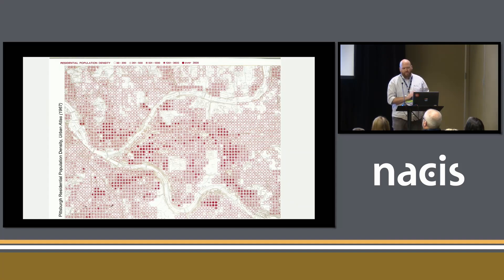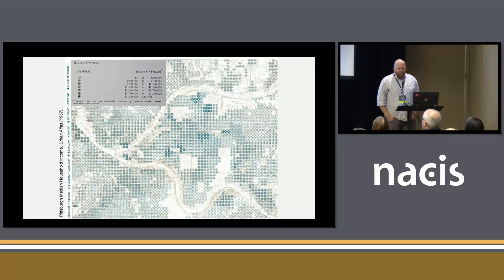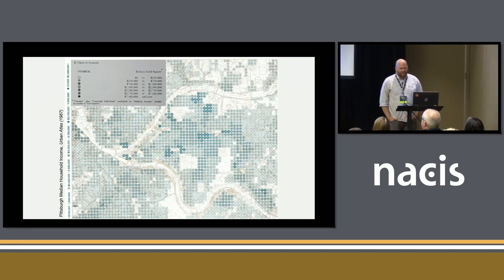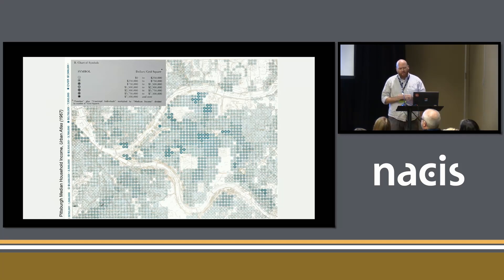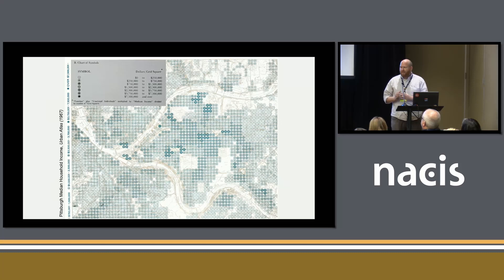I also want to point out that because of the technology he had at the time, he had to classify his data, so this is broken up into five classes. He also did something interesting with a different take on the style where he's mapping median household income — rather than filling each ring with a solid circle or dot, he is using various numbers of rings and positioning them into different classes.